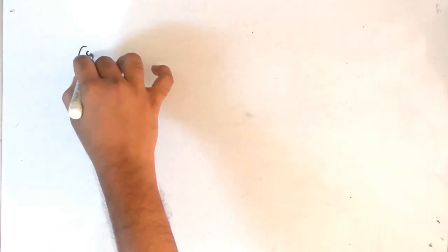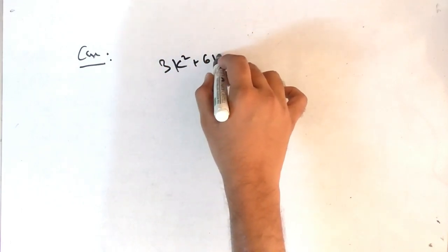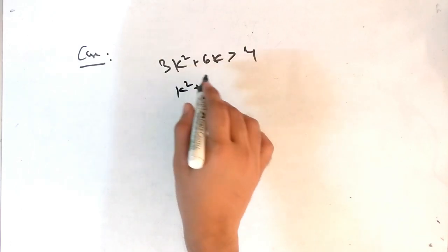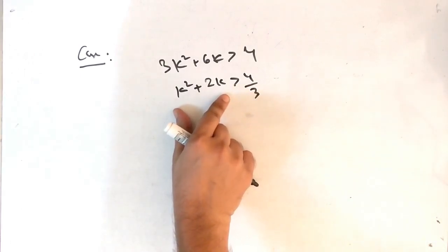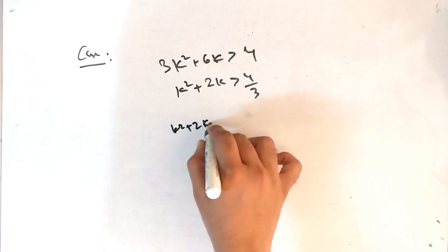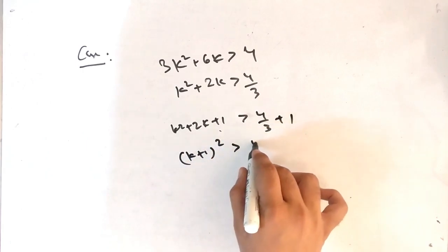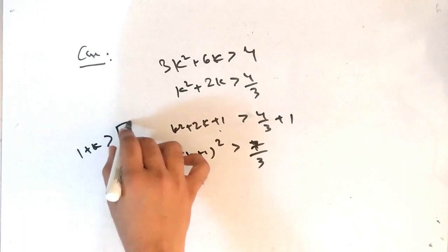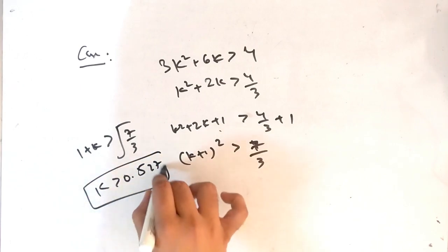One more important case: suppose while finding the range of k you land up with 3k² + 6k > 4. Divide all by 3 to get k² + 2k > 4/3. To complete the square, add 1 to both sides: (k+1)² > 7/3. Taking the square root: k + 1 > √(7/3), so k > 0.527.